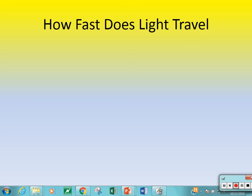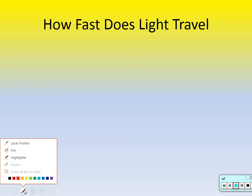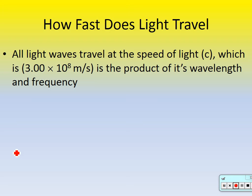I wanted to first start this video with this slide. How fast does light travel? Light travels really fast. In fact, there's nothing that goes faster than light — we call it the speed of light. All light, doesn't matter what color it is, travels at the same speed. And the speed of light is given this symbol, lowercase c. So if you see that, that means the speed of light.